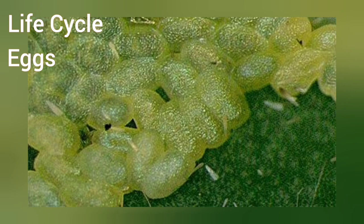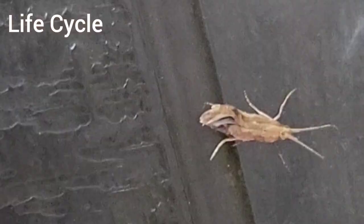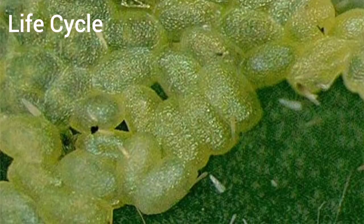Initially eggs are yellow or pale green but darken later. Females lay eggs singly or in batches of 2 to 40 eggs on the underside of leaves. In her lifetime a female lays 18 to 356 eggs. The egg period varies from 3 to 6 days.